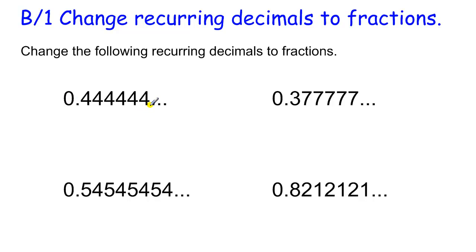The first one, 0.4 recurring. Because there's one digit recurs, we times by 10. So if we call the 0.4 recurring x and we times by 10, we end up with 4.4 recurring.